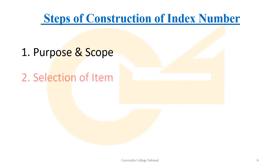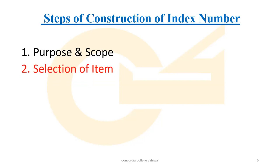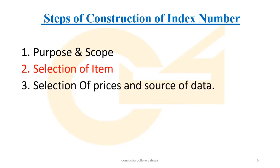The next step is the selection of items — in this step we decide how many items, or in other words commodities, we will include in our index. The third step is the selection of prices and source of data — here we decide which prices we are using and what the source of that data is.